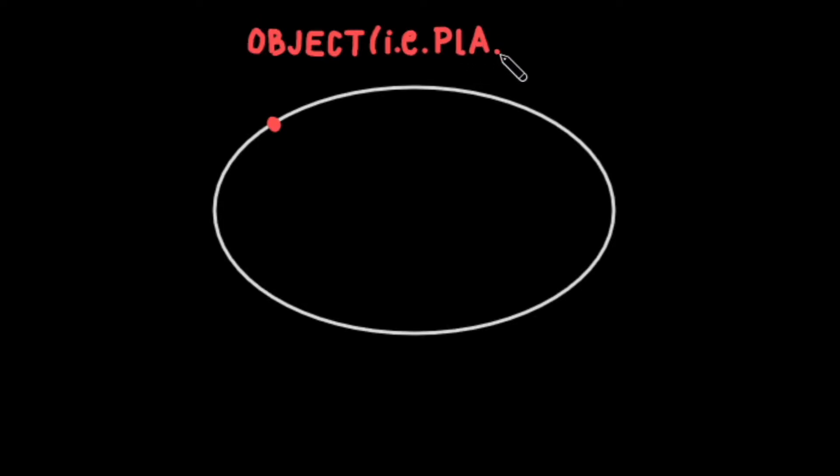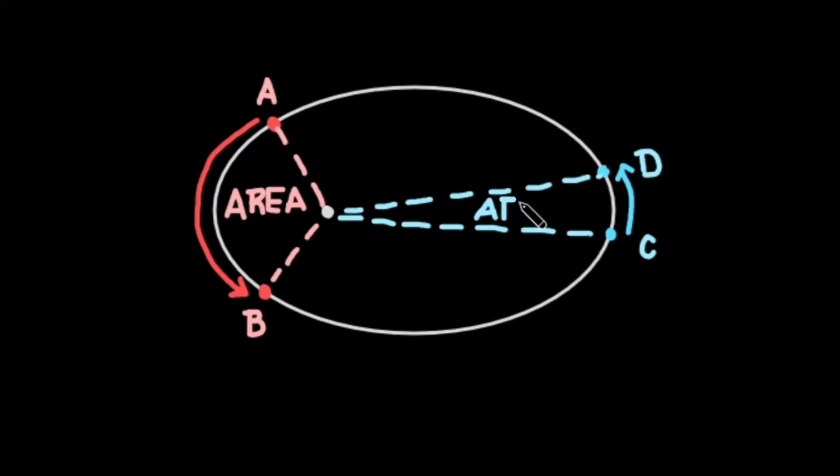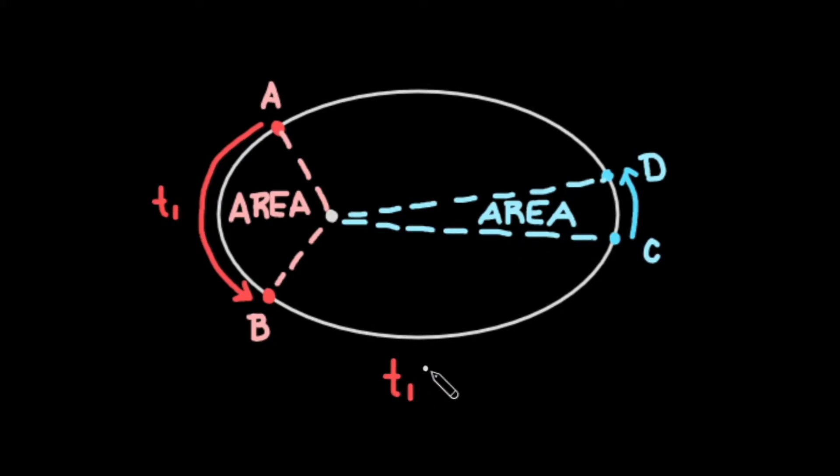What this means is that if you envision the object as a moving point along the ellipse, the area covered by connecting its positions at point A and point B to the ellipse's focus is the same as the area covered by its positions at two other points, point C and point D, that take the same amount of time to traverse. So if it takes one month to get from both A to B and from C to D, then the area encompassed by these pathways is the same.